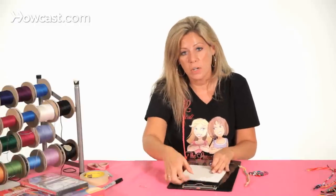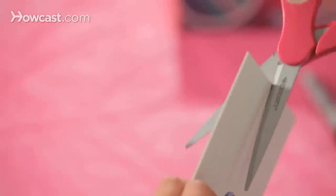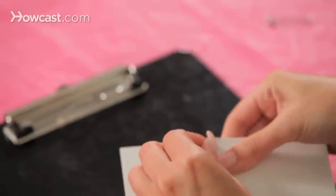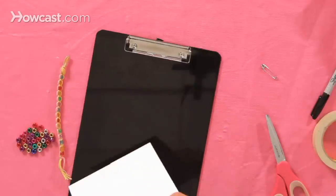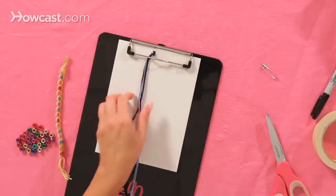After you make your loop, you're going to take your cardboard, put a slit at the bottom and a slit at the top. Place your loop into the top of the cardboard, get a piece of masking tape to hold it securely. Tape the back, and you can put it into your clipboard so it'll stay.